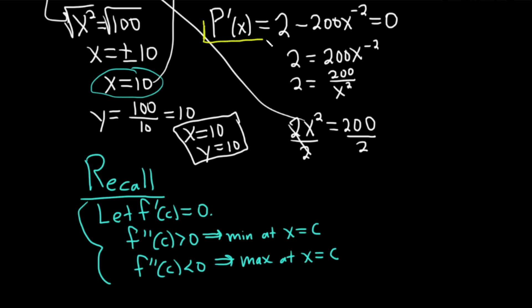So our first derivative is up here. It's P prime of x equals 2 minus 200x to the negative 2. So if we take the derivative of that, the derivative of 2 is 0, we can bring down the negative 2. It'll give us 400x to the negative 3. So P double prime of x is equal to 400 over x cubed.